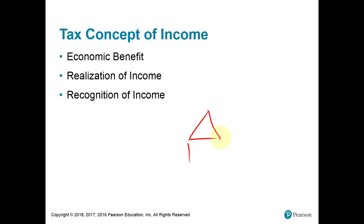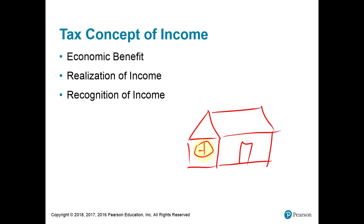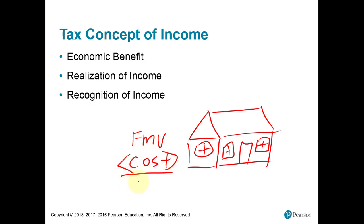Let's say you have a home — as you can see, I'm not an artist, I'm an accountant — and you're going to buy this house either for your personal residence or as an investment. You buy it at a certain cost, which we call adjusted basis, and hopefully it increases in value to what's called the fair market value: whatever a willing buyer and willing seller with adequate knowledge about the property are willing to exchange.